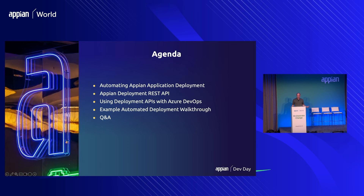Our agenda will provide a quick introduction into Appian deployment and why you might want to automate it. Then we'll look at the Appian deployment REST API and where it's at today. We'll also talk about using the deployment APIs with Azure DevOps and potentially other DevOps tools as well, and take a quick look at some sample deployment scripts. I may cut a few slides depending on time, since I tend to prepare content for an hour but we have a shorter timeframe.